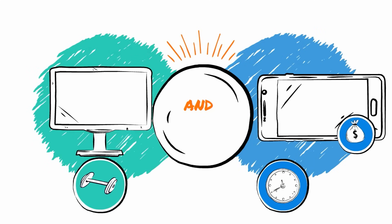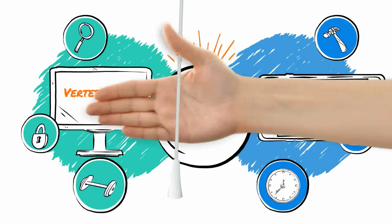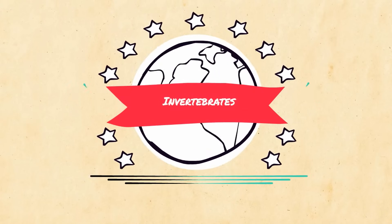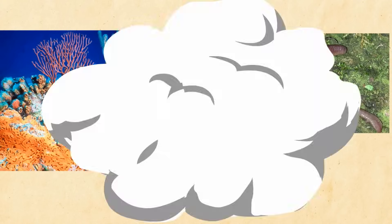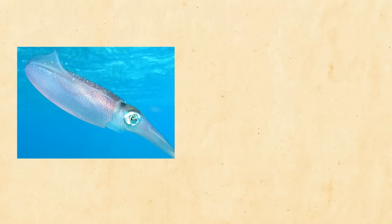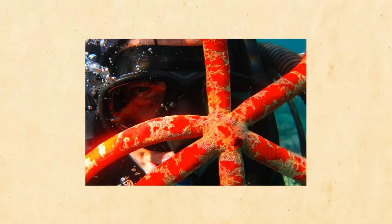There are two major categories of animals: vertebrates, which have a backbone, and invertebrates, which do not. Invertebrates make up the largest amount of animals on Earth. They include sponges, cnidarians which have stinging cells such as jellyfish, many types of worms, mollusks such as squid or octopus, arthropods which include insects, and echinoderms which are starfish and sea urchins.